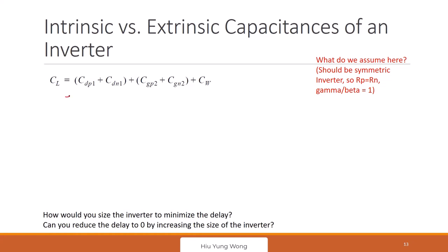And I told you already, this is nothing. I should say the delay is just equal to 0.69 r equivalent times two things: intrinsic delay plus the extrinsic delay. This is the intrinsic capacitance. This is the extrinsic capacitance.